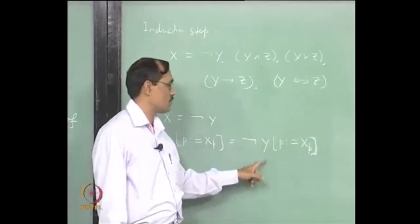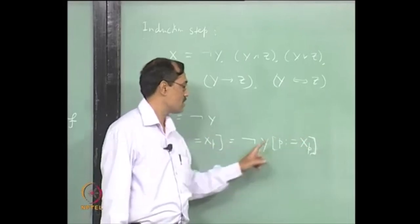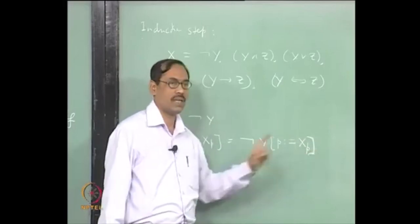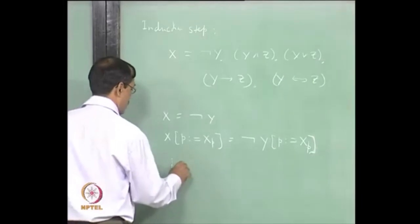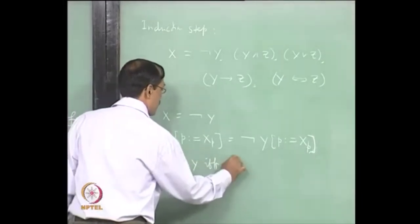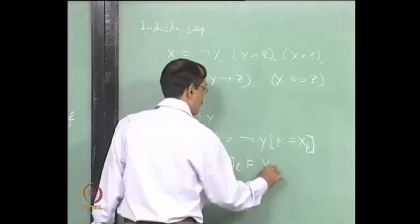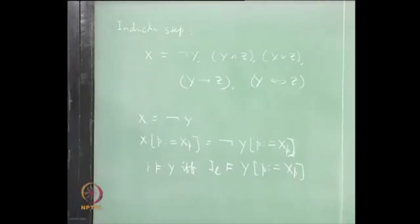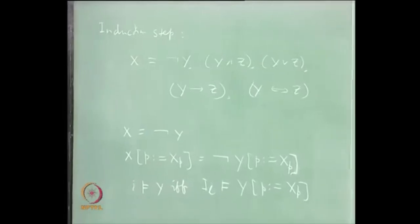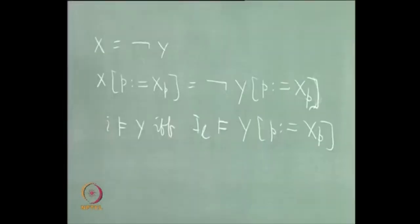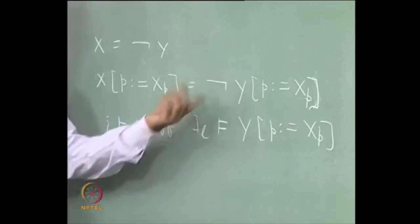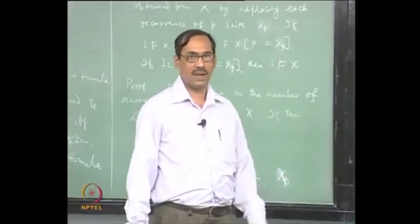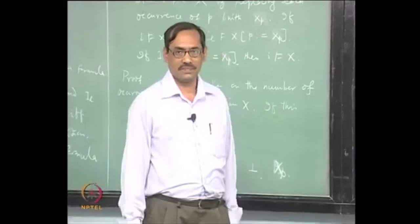The induction hypothesis says: I satisfies p if and only if I_L satisfies y with p substituted by x_p. So I satisfies y if and only if I_L satisfies y with p replaced by x_p. Now the conclusion is clear, because of the connective 'not' - I_L handles 'not' the same way as I. For all the connectives, the proof will be similar. You just go on writing it.